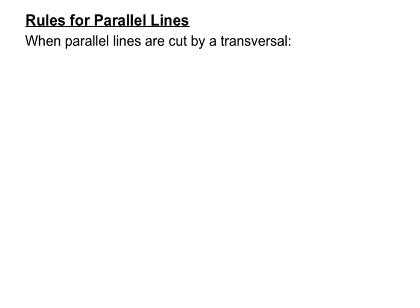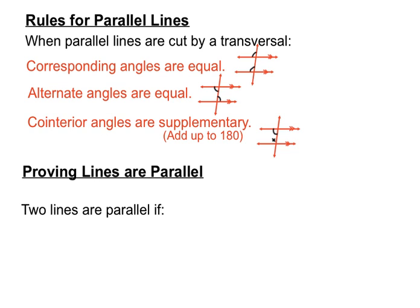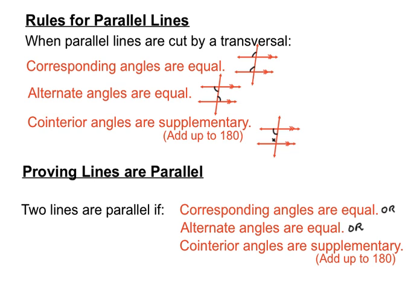Quite a lot to take in there, but let's run through the rules we talked about. When parallel lines are cut by a transversal: corresponding angles are equal; alternate angles are equal; and co-interior angles are supplementary — adding up to 180 degrees. That's when we're told the lines are parallel. We can also turn this on its head: two lines will be parallel if corresponding angles are equal, or if alternate angles are equal, or if co-interior angles add up to 180 degrees. Watch the video again if needed and get used to those terms — corresponding, alternate, and co-interior. You'll be asked about them in tests soon.